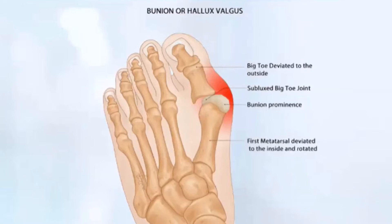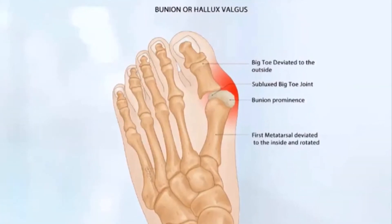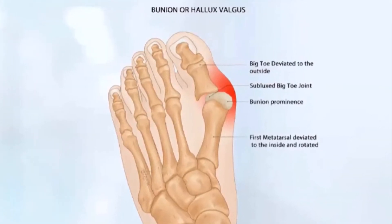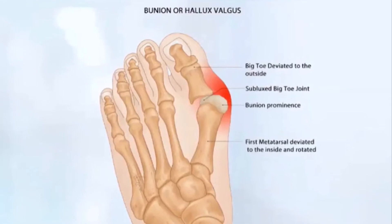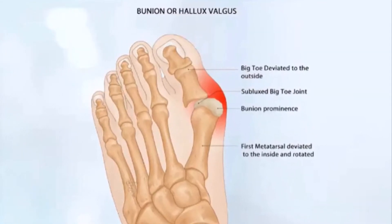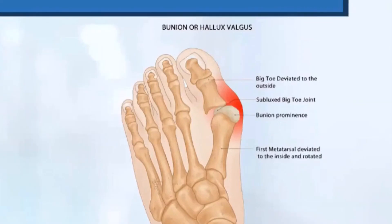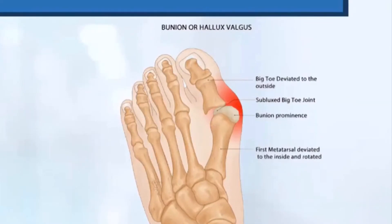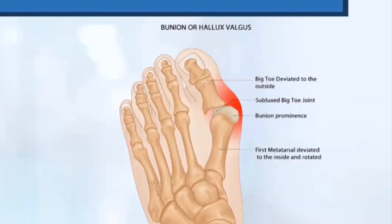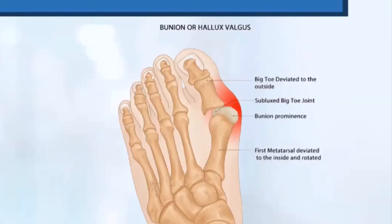Associated with that, as you can see on the screen, is the big toe deviating in the opposite direction. The metatarsal goes out, the big toe goes in, and you get what we call buckling of the joint and a prominence of the first metatarsal head — the presence of a bunion.